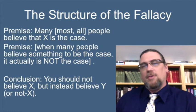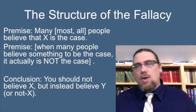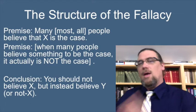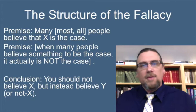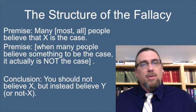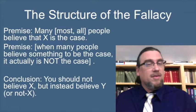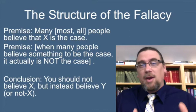What's the structure of the fallacy? There's an implicit premise getting us from the original premise all the way to the conclusion. The first premise runs: many, most, or all people believe that X is the case — very similar to the appeal to popularity. But instead of concluding 'therefore this is true,' it goes the exact opposite direction: you shouldn't believe X, but instead believe not-X or some alternative Y. The hidden premise is: when many people believe something, it actually is not the case — most people are stupid and wrong most of the time.